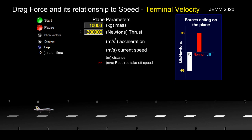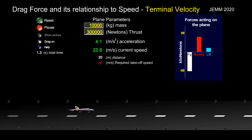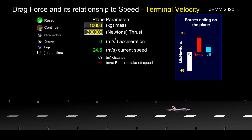Let's see what happens when we increase the thrust force. Notice, as the speed increases, acceleration decreases. Why does that happen? Well, remember, as speed increases, drag increases — that means more force is pushing back on the plane. And at this particular point, the thrust force is exactly equal to the drag force when the acceleration is zero.